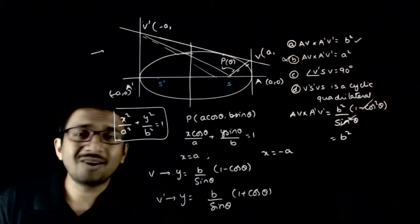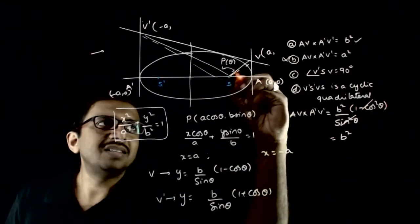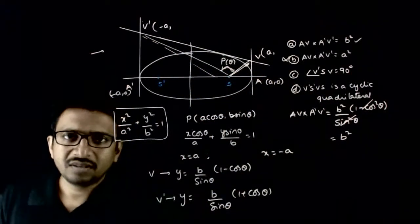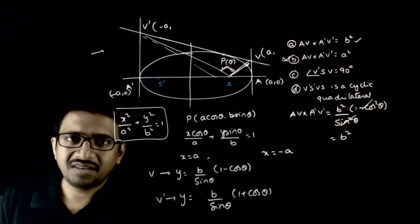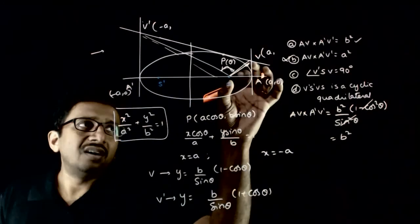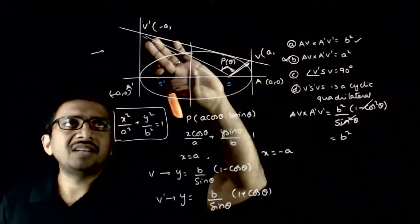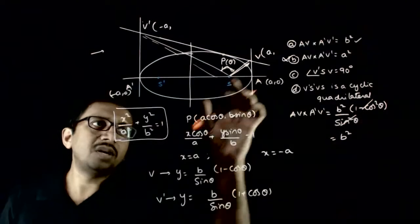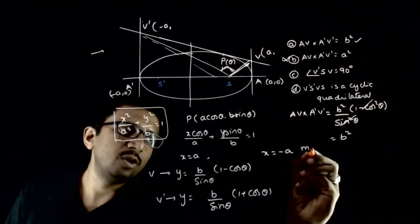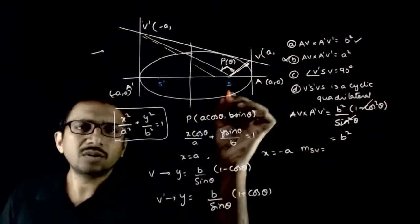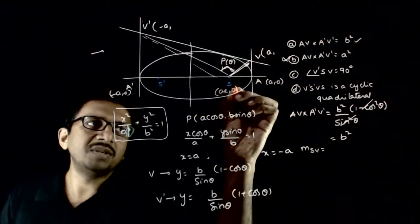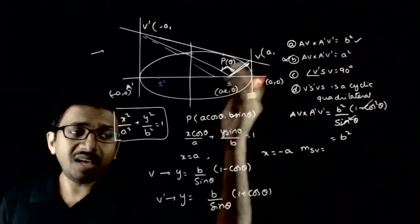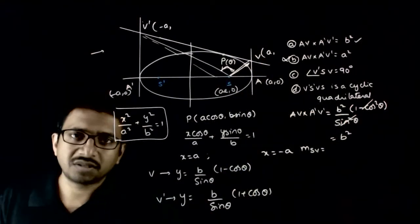Now let us check the third option — whether angle VSV dash is 90 degrees. We check whether the product of slopes m₁ · m₂ = −1. The coordinates of S are (ae, 0) and the coordinates of V are (a, (b / sinθ)(1 − cosθ)). The slope of SV is (b / sinθ)(1 − cosθ) divided by (a − ae).